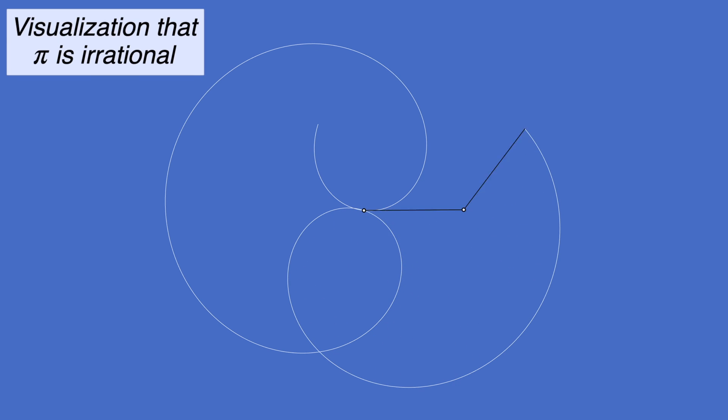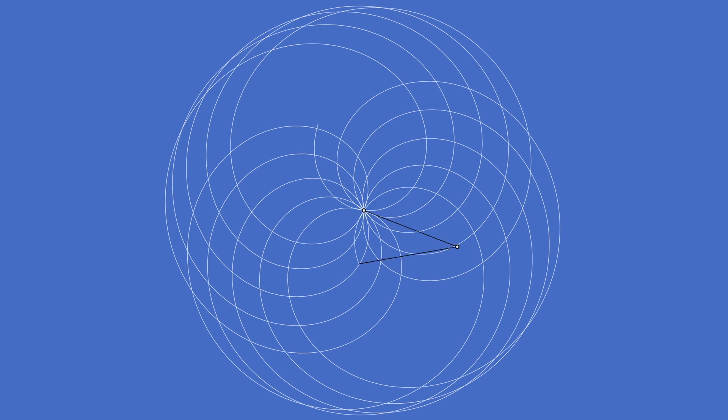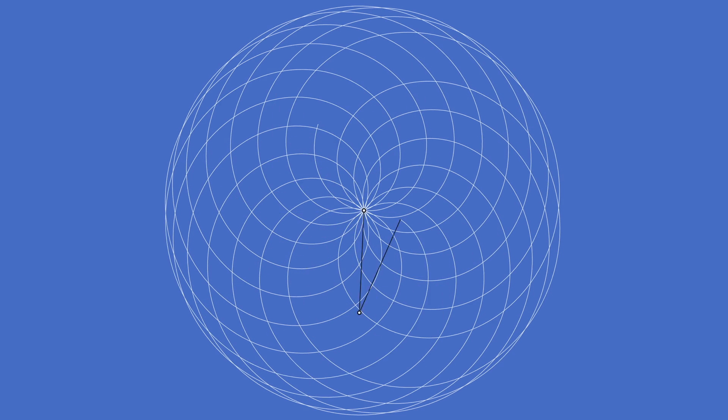You may have seen an animation like this going around social media with the title 'visualization that pi is irrational.' When it came across my feed I thought that would be fun to animate in Desmos, and it was — you're watching the result. But then I realized that this animation is showing us something even more interesting about pi than just the fact that it's irrational, so I thought I'd make a quick video about it.